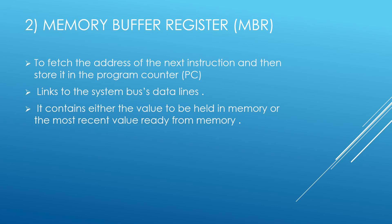Memory Buffer Register (MBR). The memory buffer register is used to store data during memory read or write operations. The MBR links to the data lines of the system bus and holds the data that is being transferred between the CPU and memory. The MBR can either contain the value to be stored in memory or the most recently retrieved value from memory, helping in the smooth transfer of data between the CPU and memory.